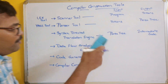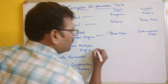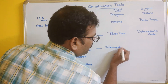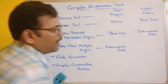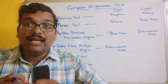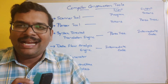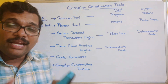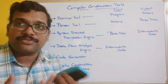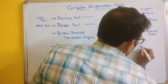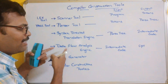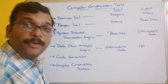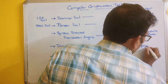The next tool is the data flow analysis engine, which takes the intermediate code as input and produces optimized code. It eliminates unnecessary instructions and makes the code optimal — that means the best code. So the output is the optimized code. This data flow analysis engine plays a very important role in code optimization.